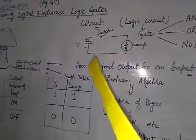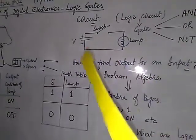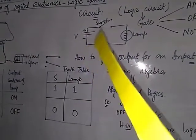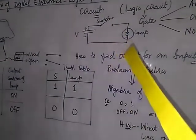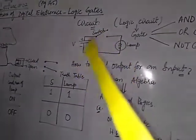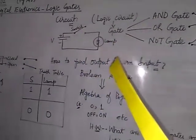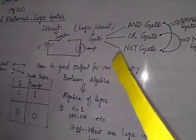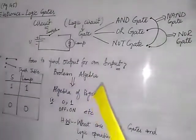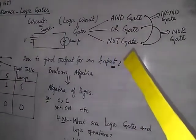The circuit for this situation is that we have a switch and a lamp connected to a voltage supplied by the battery. If the switch is open, the lamp is off, and if the switch is closed, the lamp will be on. This circuit is known as a logic gate or logic circuit. We have different kinds of logic circuits, and some of these are AND gate, OR gate, NOT gate.